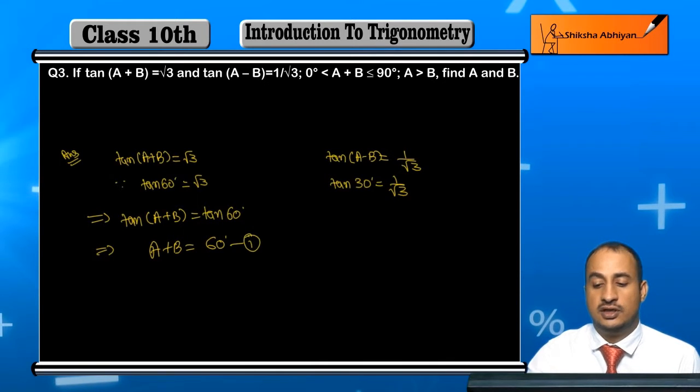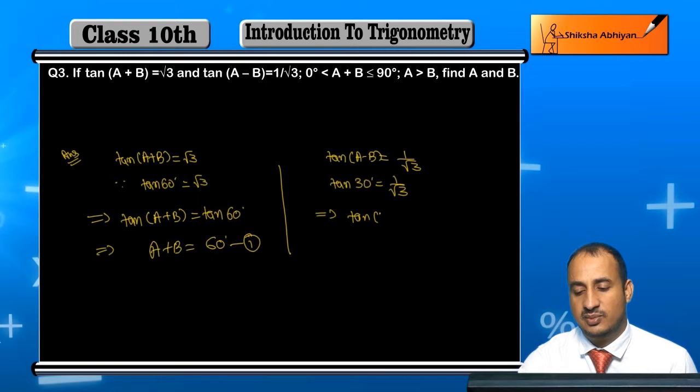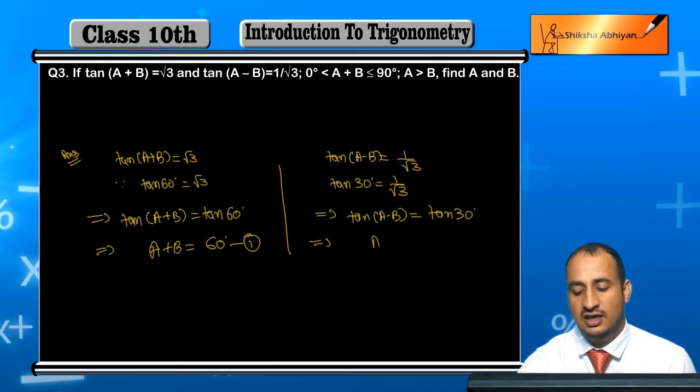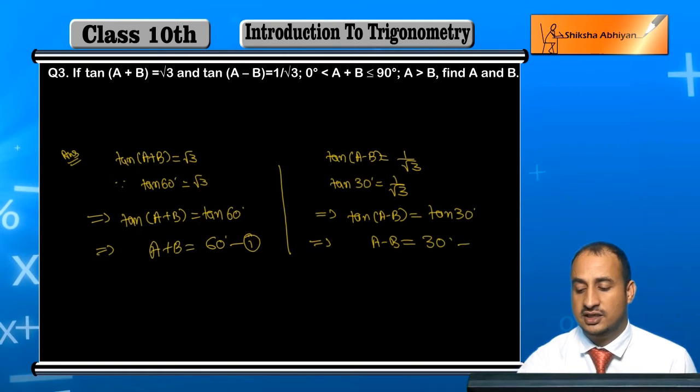Now similarly, students, here I can write: this implies that for the second part, A - B = tan 30°, and further A - B will equal 30°. Let's call this equation 2.